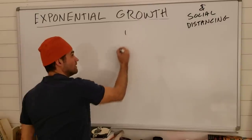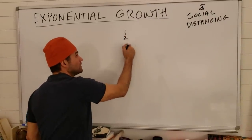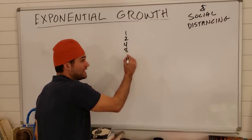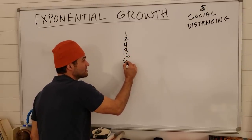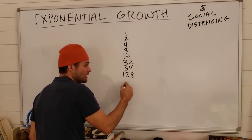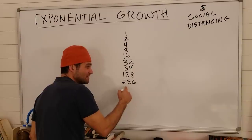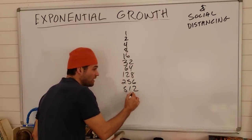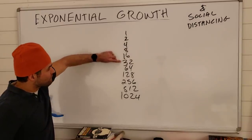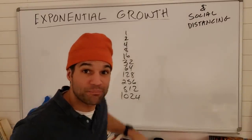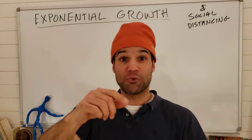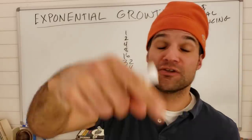I take the number 1 and double it. 2 to 4, 4 is 8, 8 is 16, 16 is 32, 32 is 64, 128, 256, 512, 1024. That's 10 doublings. So if you double something 10 times, guess what? You got 1,000 times more than you started with.